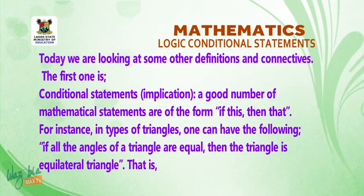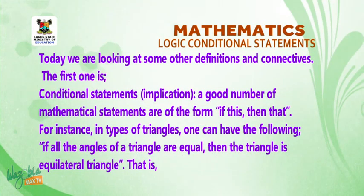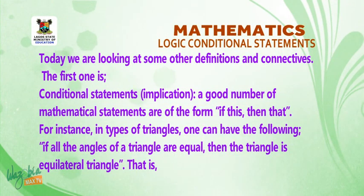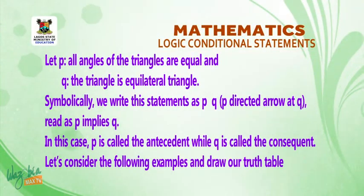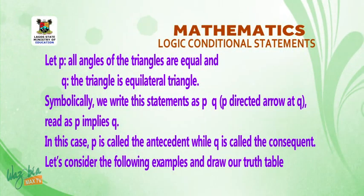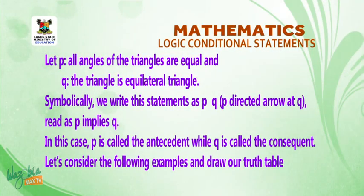For instance, in types of triangles, one can have the following: 'if all the angles of a triangle are equal, then the triangle is equilateral.' That is, let p be the statement: all angles of a triangle are equal, and q be the statement: the triangle is an equilateral triangle.